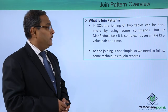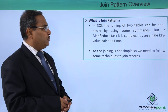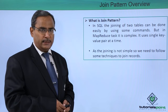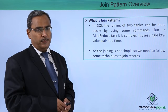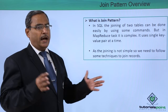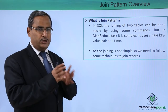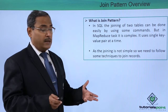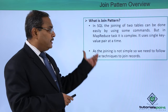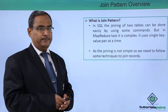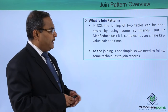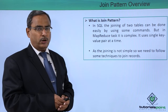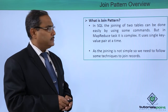What is join pattern? In SQL, the joining of two tables can be done easily by using some commands and queries, taking some attributes as common between the tables to perform the joining. But in MapReduce tasks, it is complex because it uses a single key value pair at a time. So, as the joining is not simple, we need to follow some techniques to join records in our MapReduce applications.